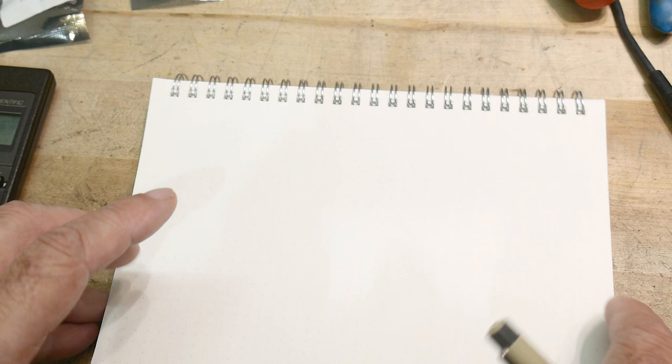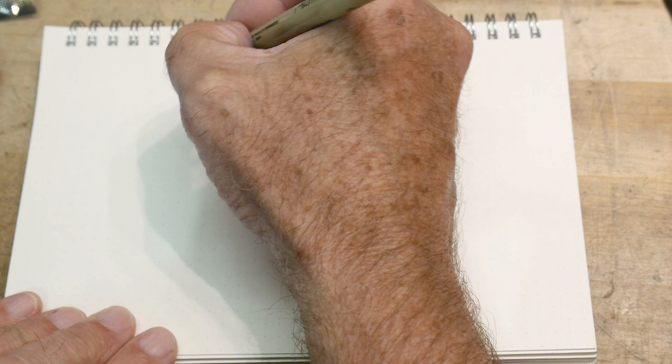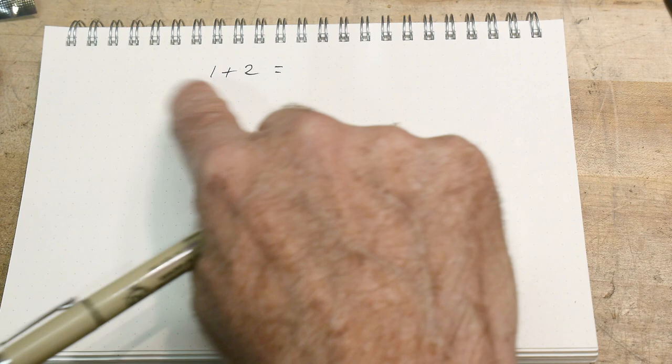So that stands for reverse Polish notation. So what is Polish notation? Well before we get to Polish notation, how do we write numbers these days? If we want to add 1 plus 2, we say 1 plus 2 equals. We do that on a piece of paper. And this notation, this 1 plus 2, it's a number and an operator and a number, and then a thing to do it.